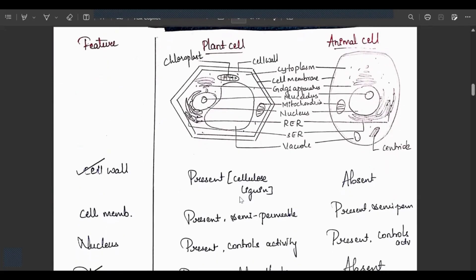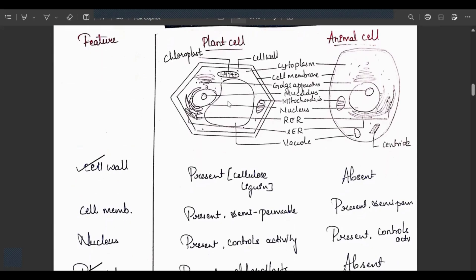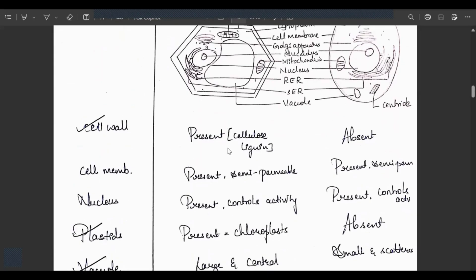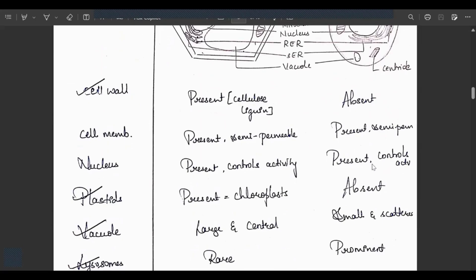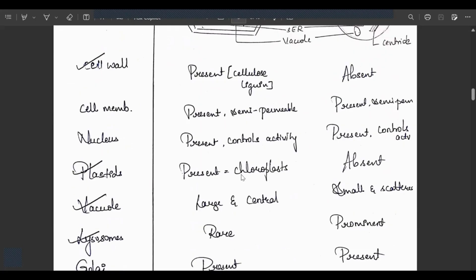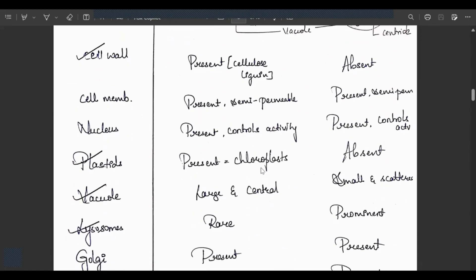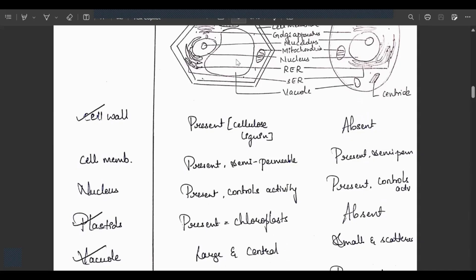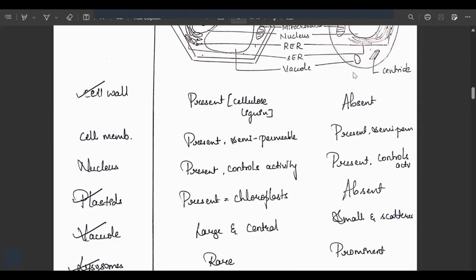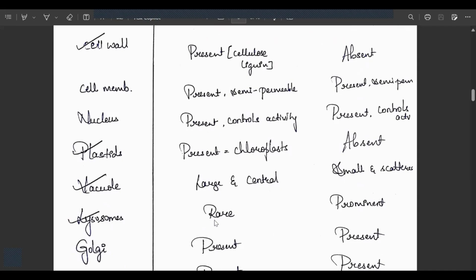Differentiate between plant cell and animal cell. First, write the diagram showing all organelles. Main difference: cell wall made of cellulose and lignin present in plant cells but absent in animal cells. Cell membrane present in both and semi-permeable. Nucleus present in both, controls activity. Plastids present only in plant cells as chloroplasts but absent in animal cells. Vacuoles very large and centrally placed in plant cells but small and scattered in animal cells.